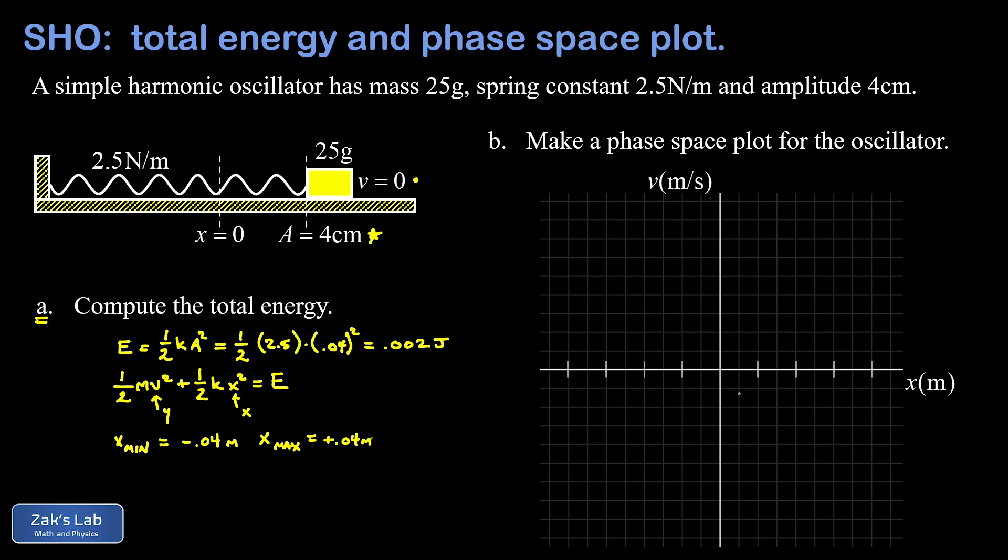I'm going to go ahead and scale the x-axis here so that every tick mark is 0.01 meters. That means this extreme value over here is plus 0.04 meters and over here is minus 0.04 meters. When our oscillator is at these extreme values of x, v is zero, so we're talking about a point that passes through the x-axis in the phase space plot.